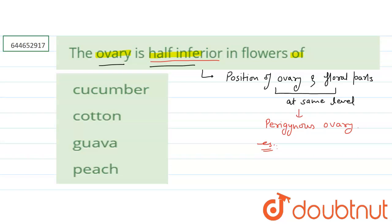An example of plants which show this kind of arrangement — the perigynous ovary — is peach, plum, etc.